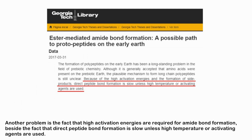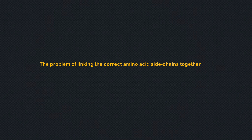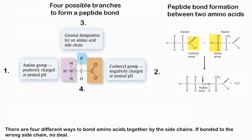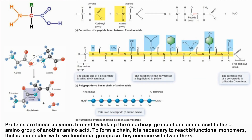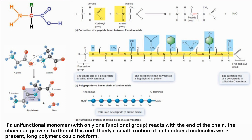There are four different ways to bond amino acids together by their side chains; if bonded to the wrong side chain, no viable protein results. Proteins are linear polymers formed by linking the alpha-carboxyl group of one amino acid to the alpha-amino group of another. It is necessary that only bifunctional monomers react together — molecules with two functional groups. If a unifunctional monomer with only one functional group reacts with the end of a chain, the chain can grow no further at that end, and long polymers could not form.